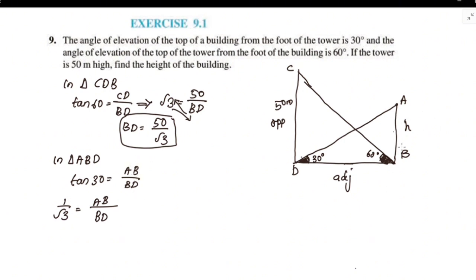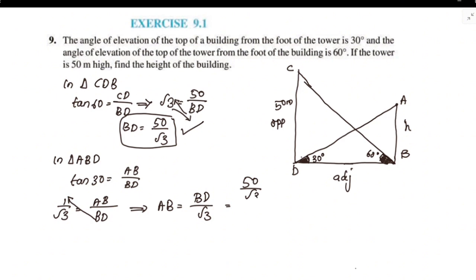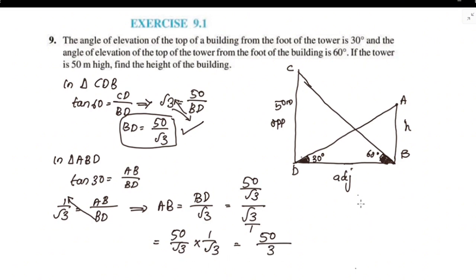So AB is the height of the building. Tan 30° = 1/√3, so 1/√3 = AB/BD. Substituting BD = 50/√3, we get AB = BD/√3 = (50/√3)/√3 = 50/3.